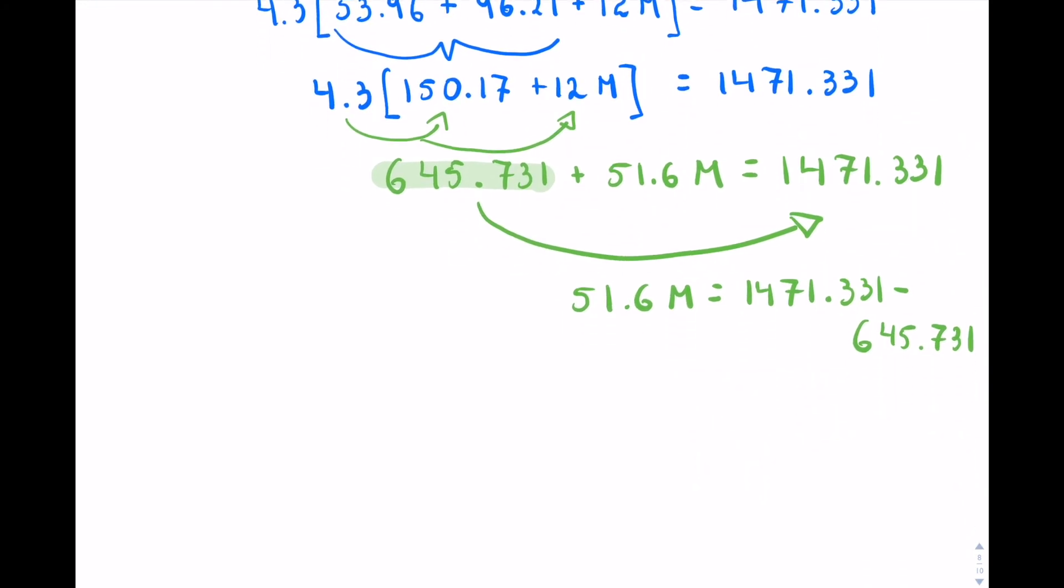So now if I do the subtraction, so 1471.331 minus 645.731, we'll get 825.6.